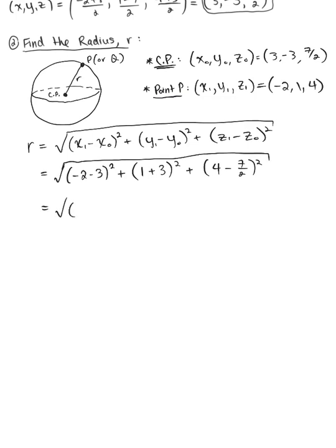We have the square root of (negative 5)² plus (4)² plus—we can think about this 4 as 8/2, so 8/2 minus 7/2 leaves us with (1/2)². So negative 5 squared gives us 25 plus 4 squared is 16, and 1/2 squared is 1/4.